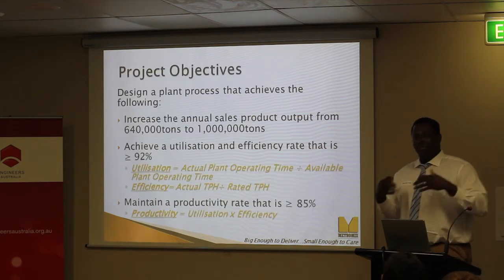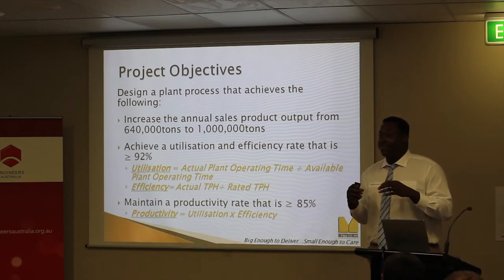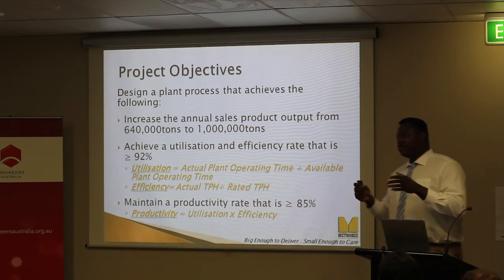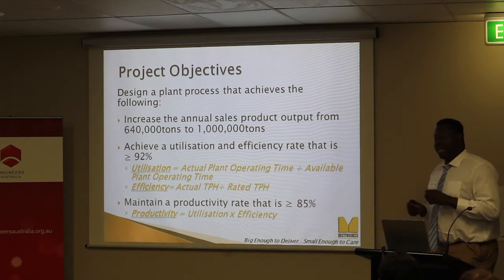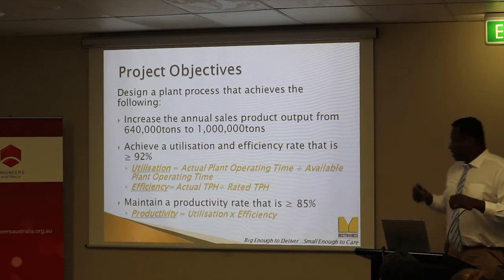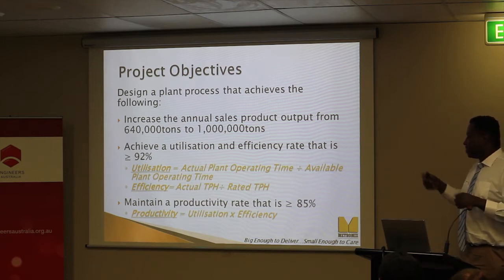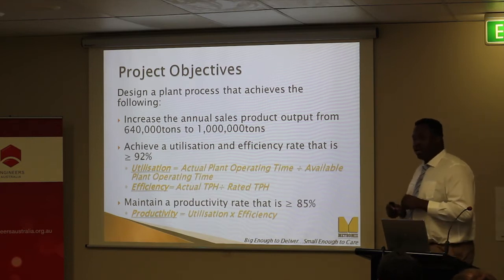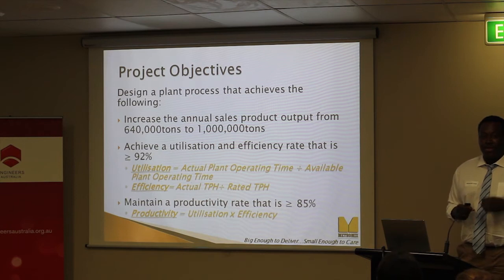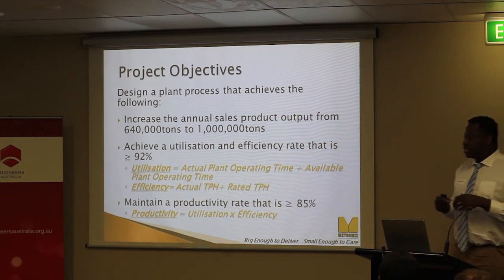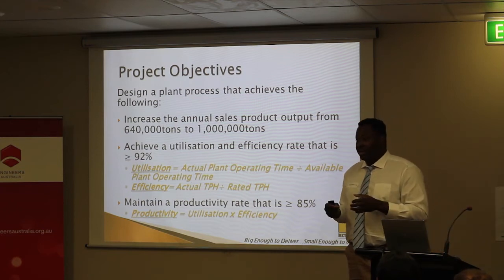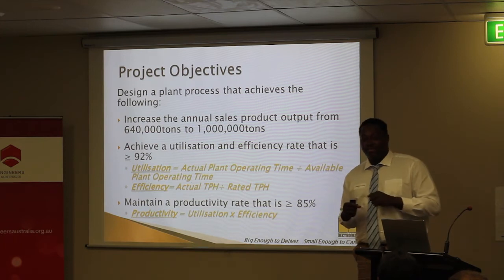So, objectives. What I plan to do with this project is to design a plant process that's capable of achieving 1 million tons per year. I also want my design process to achieve a utilization and efficiency rating of 92% or higher. I've defined utilization as the actual plant operating time divided by the available plant operating time, and efficiency as the actual tons per hour divided by the rated tons per hour. If my design process can achieve these two ratings, that will yield a productivity rating of 85% or more, which is another objective of my project.